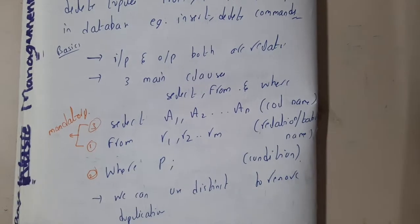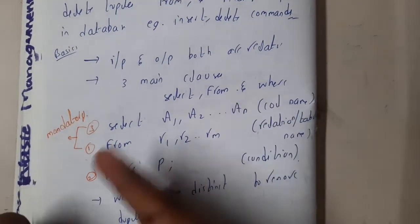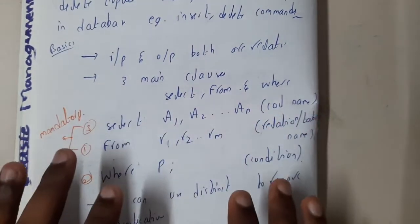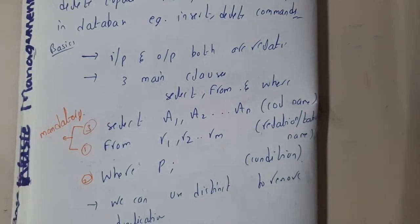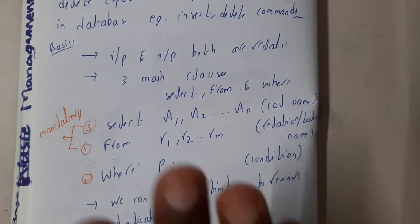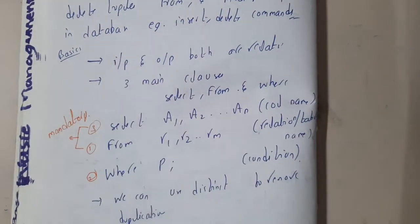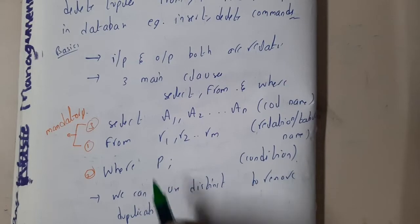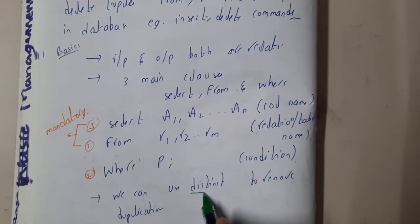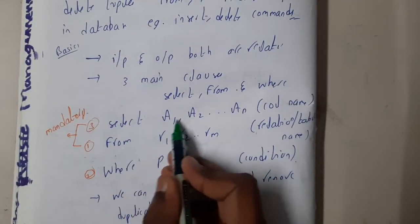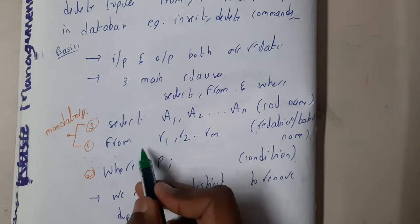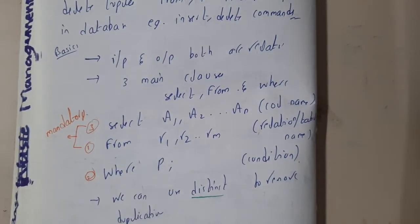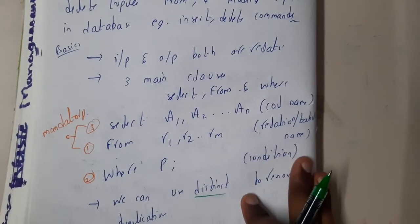In relational algebra, duplicates are not allowed. But in SQL, duplicates are allowed by default. If you want to remove duplicates, you use the keyword DISTINCT — writing: SELECT DISTINCT values FROM table WHERE condition.